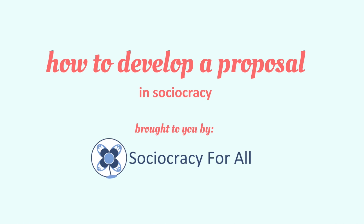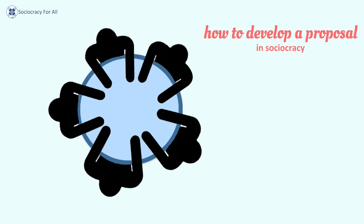How to develop a proposal in Sociocracy. My name is Jennifer Raun and I'm part of Sociocracy for All. When we have a circle — the group of people who work together and therefore makes policy together — imagine there's a problem they have to react to. If they have policy in place, they might evaluate and adjust it. But if they generate a proposal from scratch, how does that work? This video shows a helpful format with several distinct steps to generate policy.